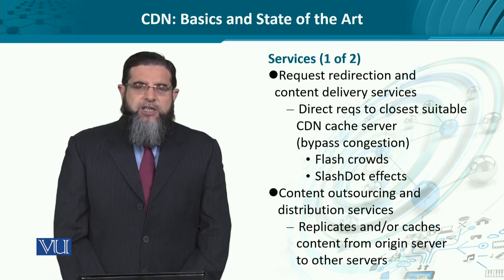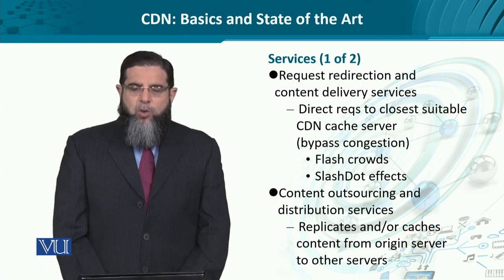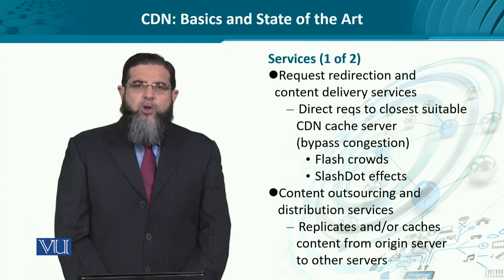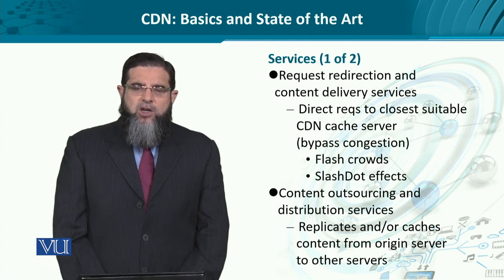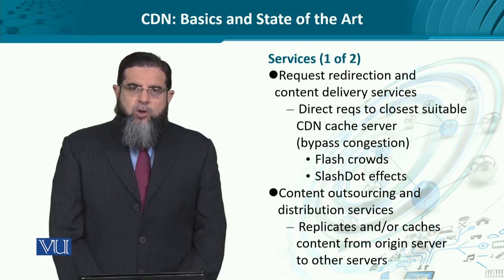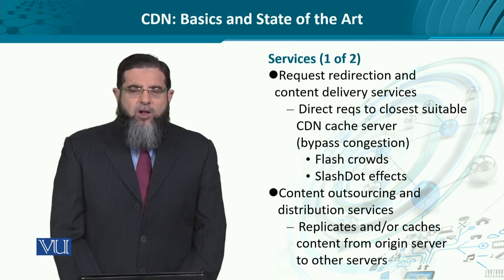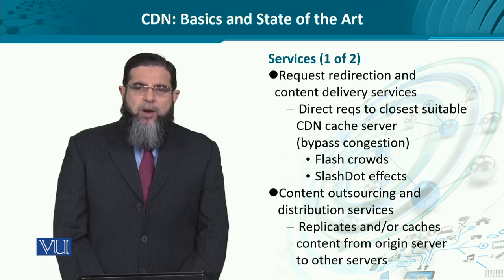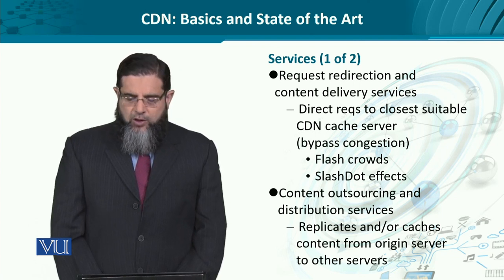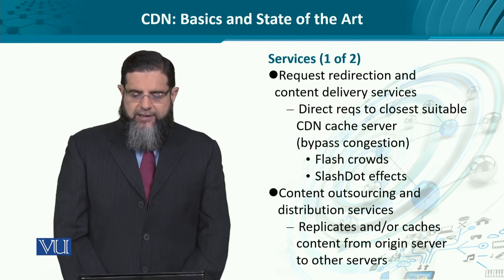Two well-known examples of congestion are mentioned here. One is the flash crowds, where a very well-known website is accessed by millions of customers through a hyperlink provided as an ad on a not-so-well-known limited-resource server. So that small-scale web server would be starved or choked because it is relaying the request to that well-known web server which has a lot of resources at its end.